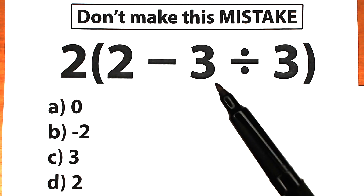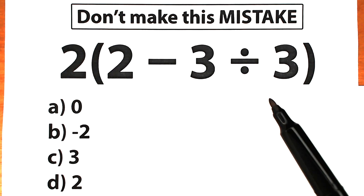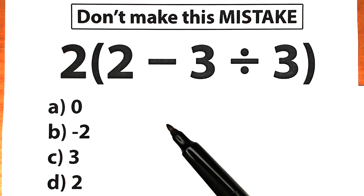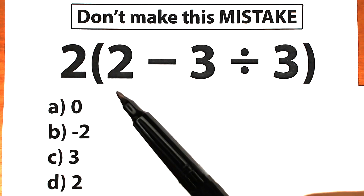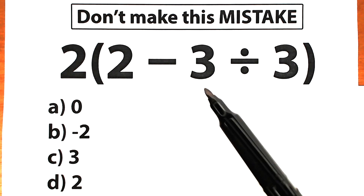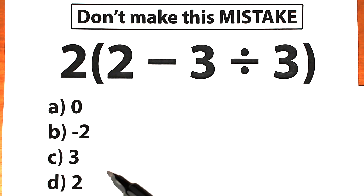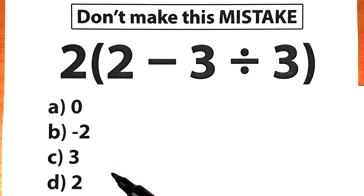2 times 2 minus 3 divided by 3 inside parentheses. At first sight it looks pretty easy, right? We only have multiplication sign, subtraction sign, division sign. But a lot of students make this common mistake — they don't know what is the correct order, the correct property, the correct definition.